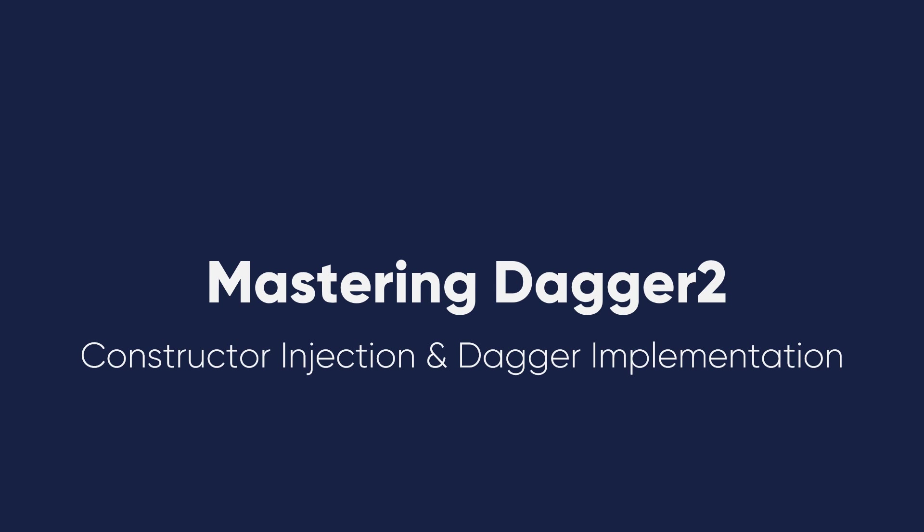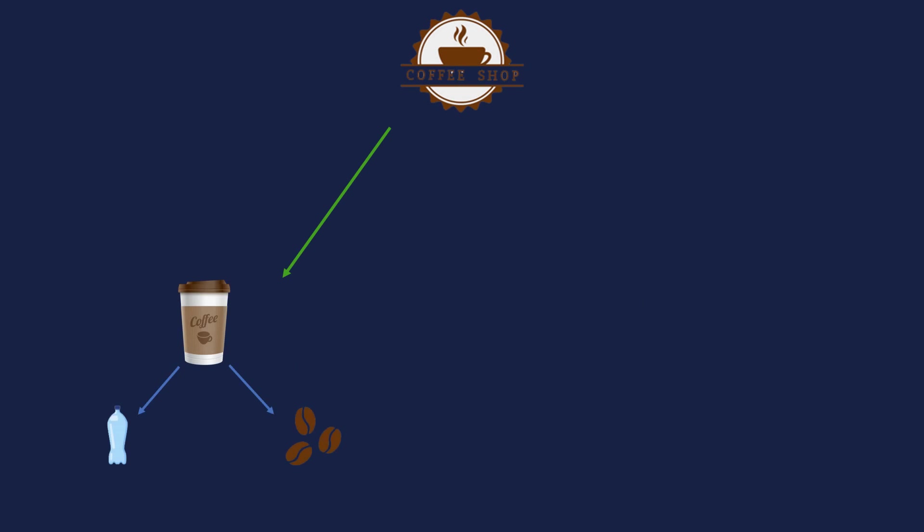We will start with constructor injection and learn about the Dagger implementation. But first, let me illustrate some concepts. If we go to the coffee shop again — if you are the owner of the coffee shop and a customer came in — you need to determine two main things. The first is the components: the coffee, the beans, the water. The coffee and the beans and the water should be determined.